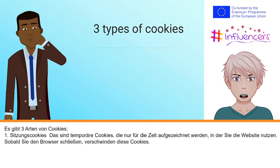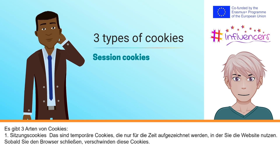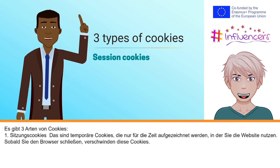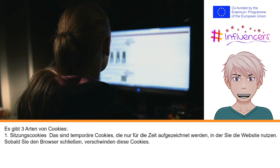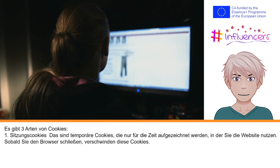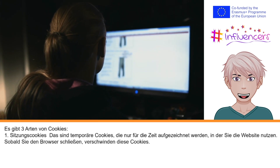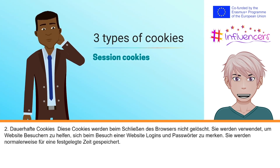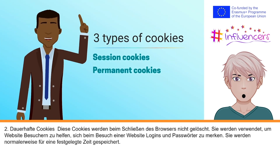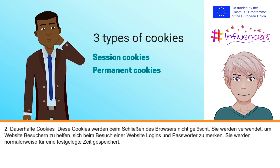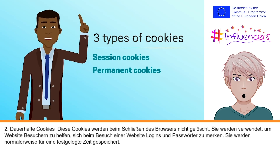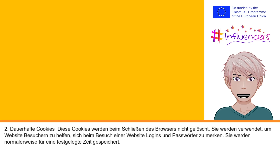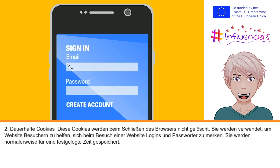There are three types of cookies. First, session cookies: these are temporary cookies recorded only for the short time you are using the site. Once you close the browser, the cookies will vanish. Second, permanent cookies: these do not go away when you close the browser. They are used to help site visitors remember logins and passwords when they visit a website.